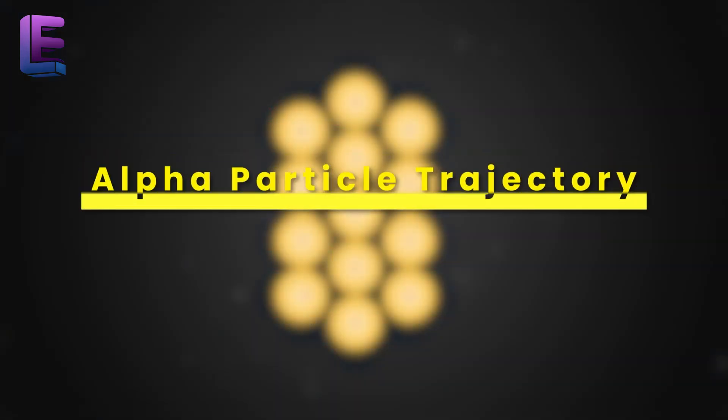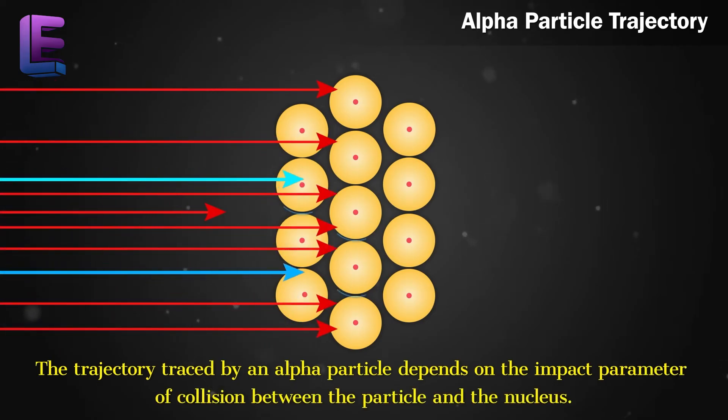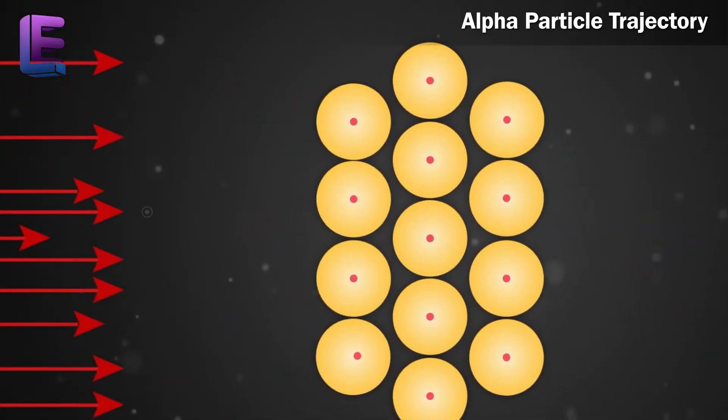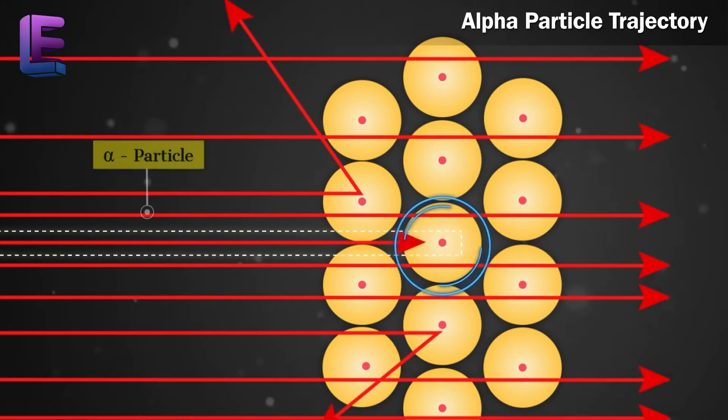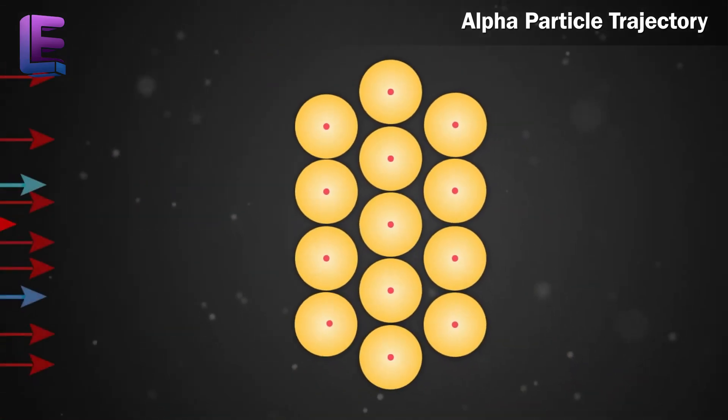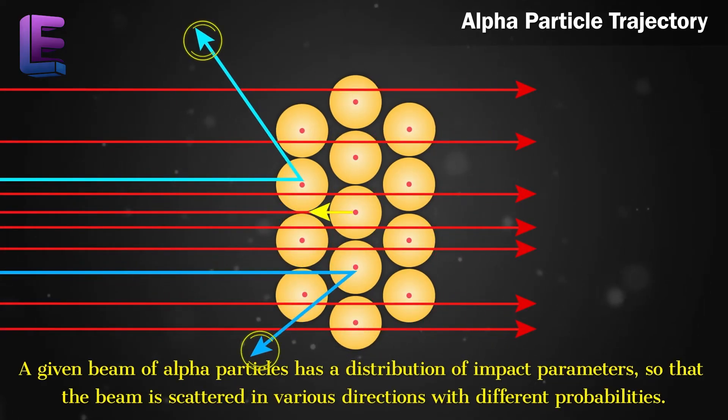Alpha Particle Trajectory. The trajectory traced by an alpha particle depends on the impact parameter of collision between the particle and the nucleus. The impact parameter is the perpendicular distance of the initial velocity vector of the alpha particle from the center of the nucleus. A given beam of alpha particles has a distribution of impact parameters so that the beam is scattered in various directions with different probabilities.